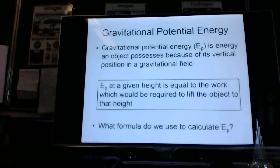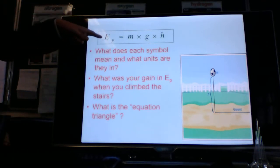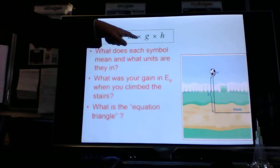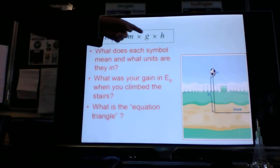How do we calculate gravitational potential energy? I hear you ask. Done like this. So gravitational potential energy, Ep, is equal to m times g times h.